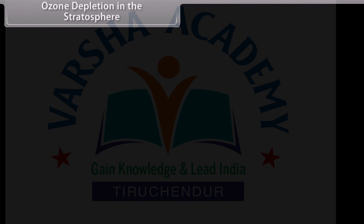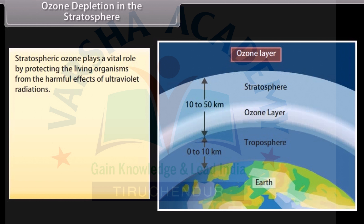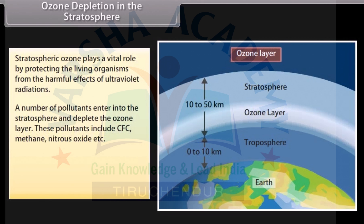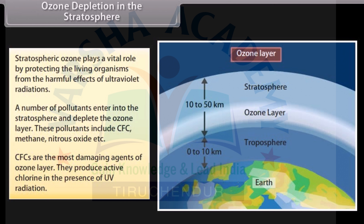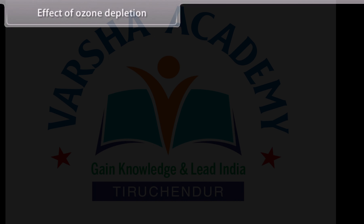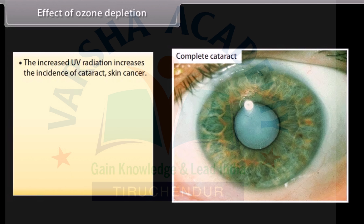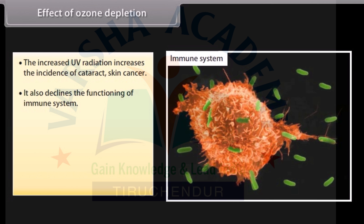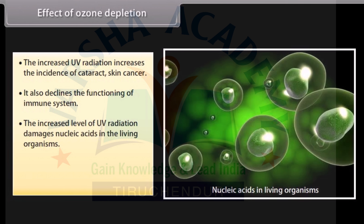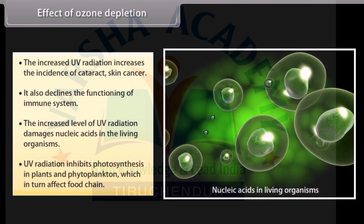Ozone Depletion: In the stratosphere, ozone plays a vital role by protecting living organisms from the harmful effects of ultraviolet (UV) radiation. A number of pollutants enter the stratosphere and deplete the ozone layer. These pollutants include CFCs, methane, and nitrous oxide. CFCs are the most damaging agents of the ozone layer; they produce active chlorine in the presence of UV radiation. Effects of ozone depletion include increased incidence of cataracts and skin cancer, declined immune system functioning, damage to nucleic acids in living organisms, and inhibition of photosynthesis in plants and phytoplankton, which in turn affects the food chain.